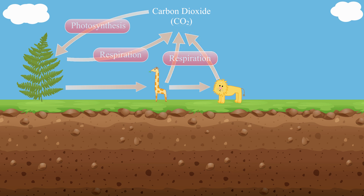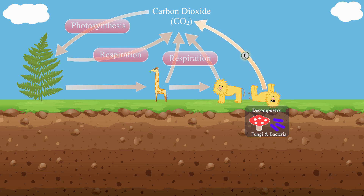When organisms die or produce wastes, decomposers like bacteria and fungi break down the carbon compounds that are present in the dead bodies or wastes. This also returns carbon dioxide to the atmosphere, since decomposers are doing respiration with much of the material that they are decomposing.